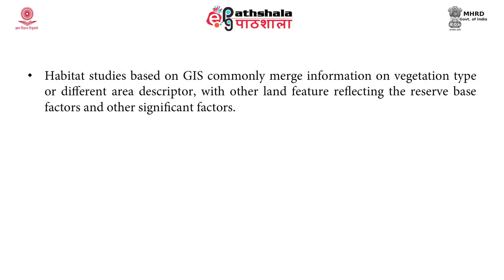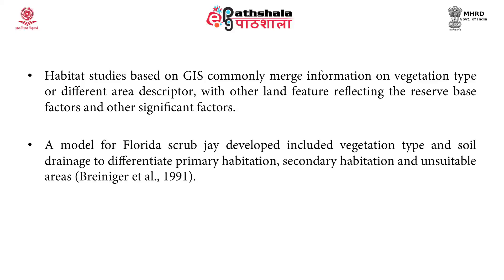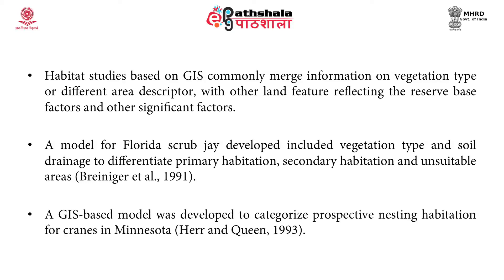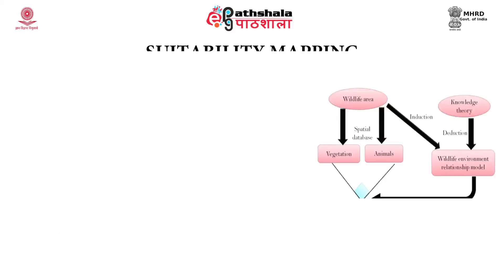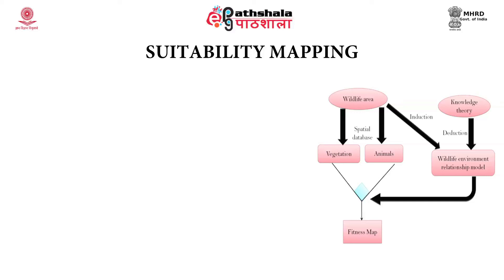Habitat studies based on GIS commonly merge information on vegetation type or different area descriptors with other land features reflecting reserve base factors and other significant factors. For example, a model for Florida scrub jay developed by Breininger and his team included vegetation type and soil drainage to differentiate primary habitation, secondary habitation, and unsuitable areas. A GIS-based model was also developed by Hare and Queen in 1993 to categorize prospective nesting habitation for cranes in Minnesota, USA. This figure shows an overall sketch for GIS-based suitability mapping.